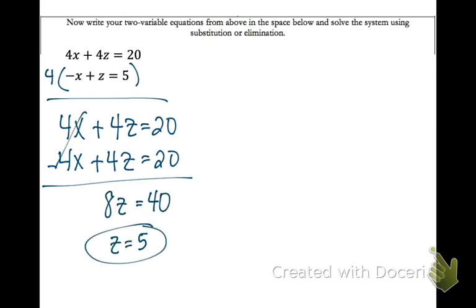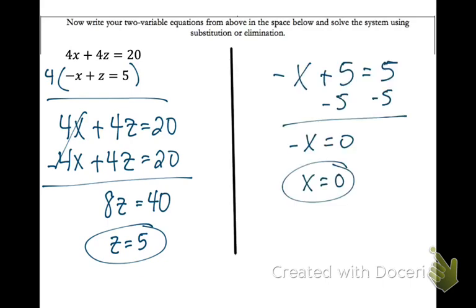When I do that, I get z equals 5. Now take z equals 5 and plug it back into one of the two equations in the same box. I will probably use the bottom equation. It looks easiest to me. And I get x equals 0.